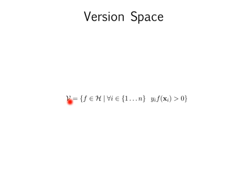So now we need to define something called the version space, which is actually a very simple concept. Basically it's a set of all functions in our hypothesis set that satisfy this condition. All this condition is saying is that the sign of the label — and here I should mention that we're assuming our label is either plus one or minus one — the true label and the predicted label are the same. So essentially the version space consists of all functions that linearly separate the data.